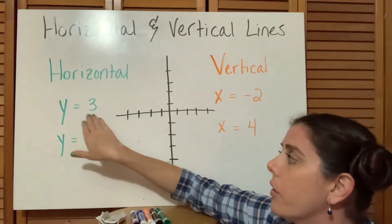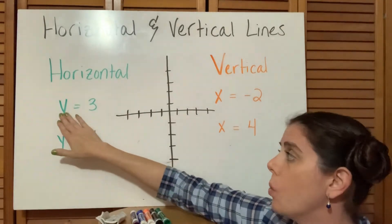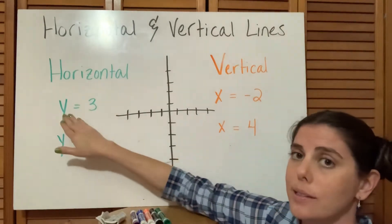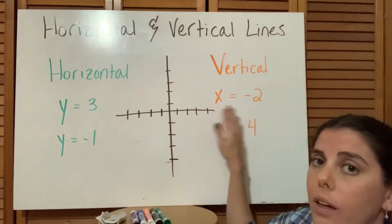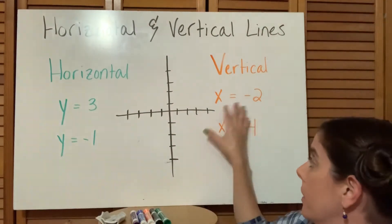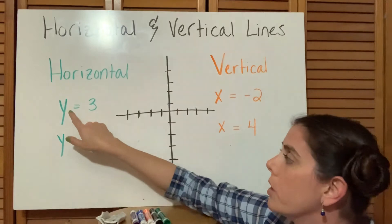Because these don't have any other variables that they're related to - the y is not related to an x in this equation and the x is not related to a y in these equations - what we're doing is just saying okay, on the y-axis we're going to go to 3.